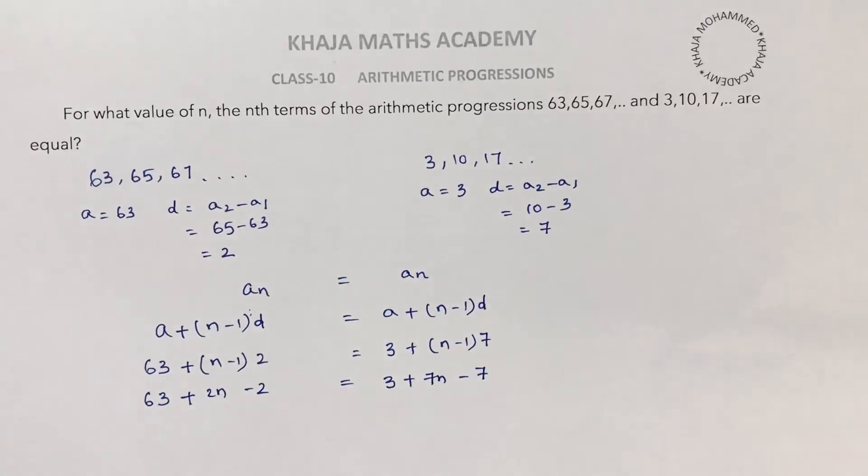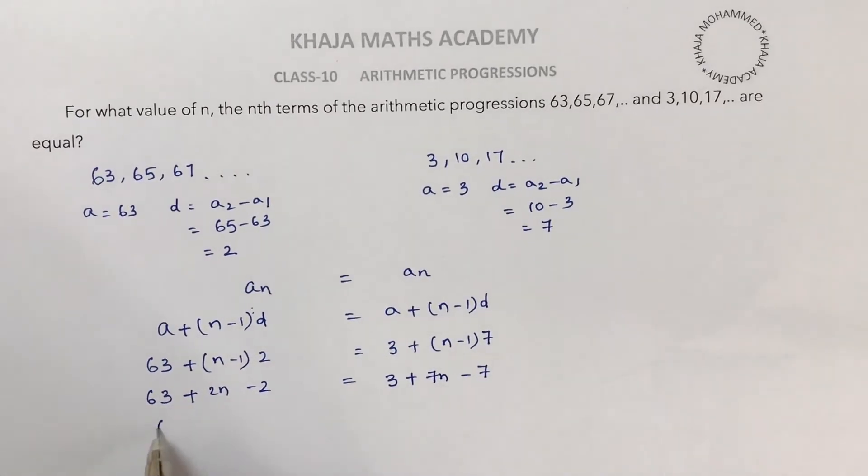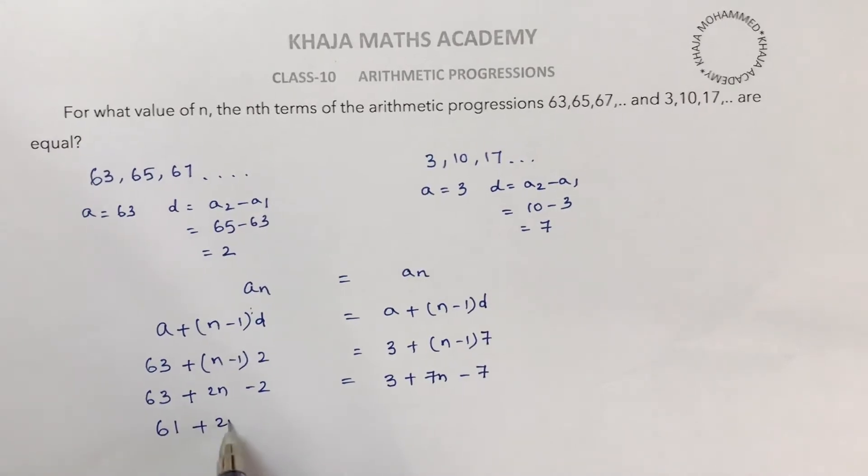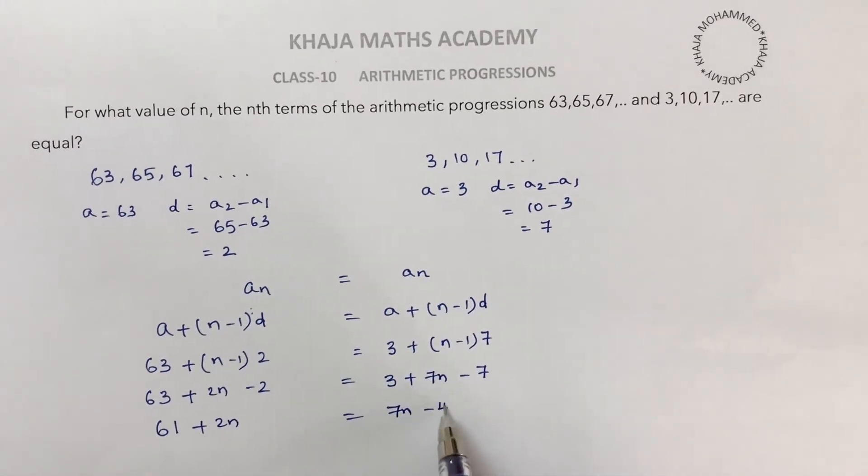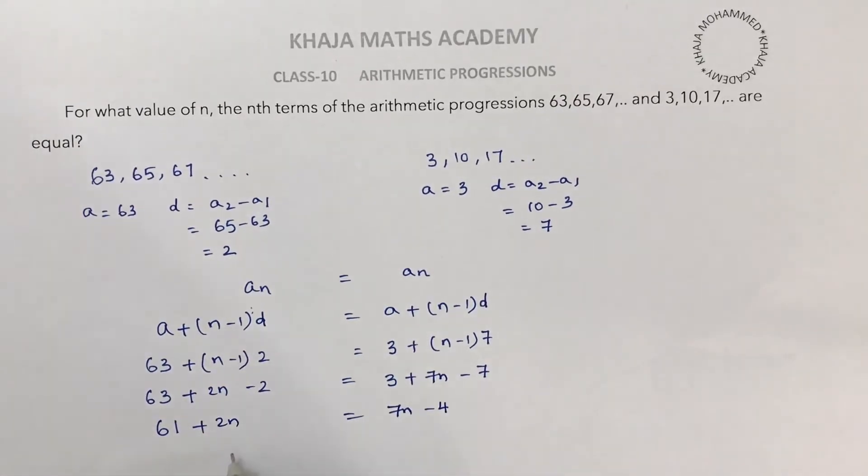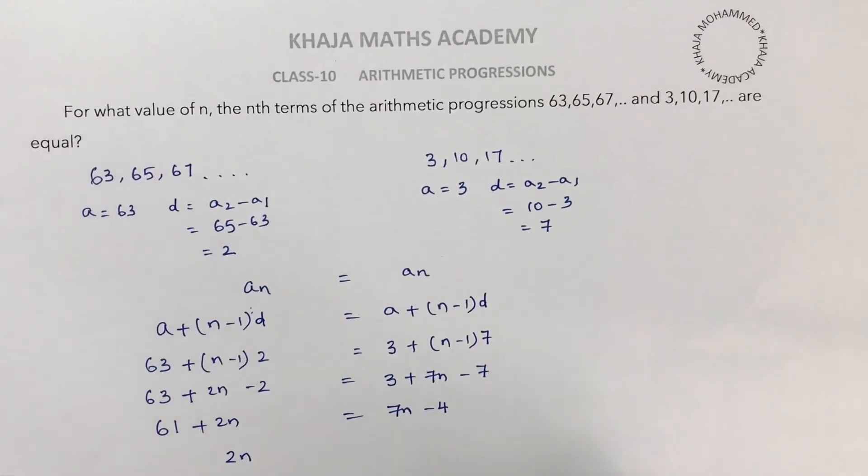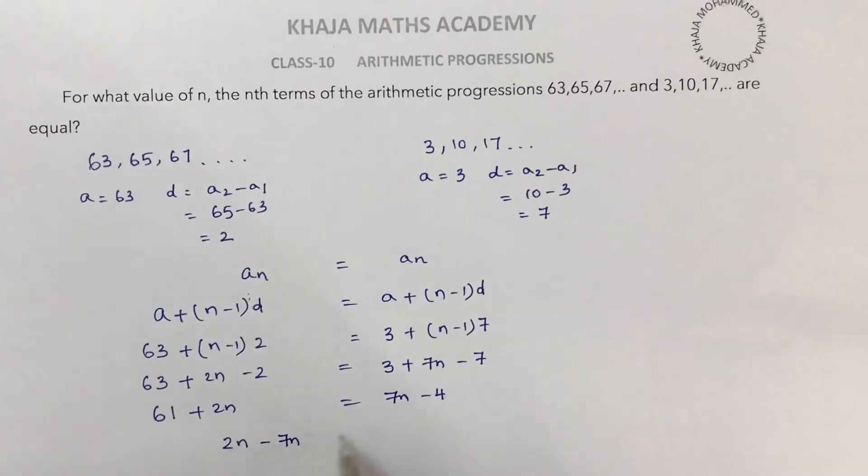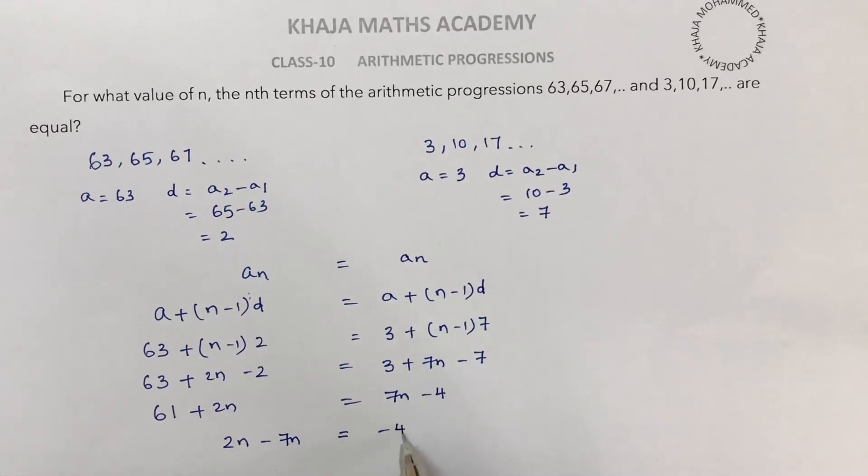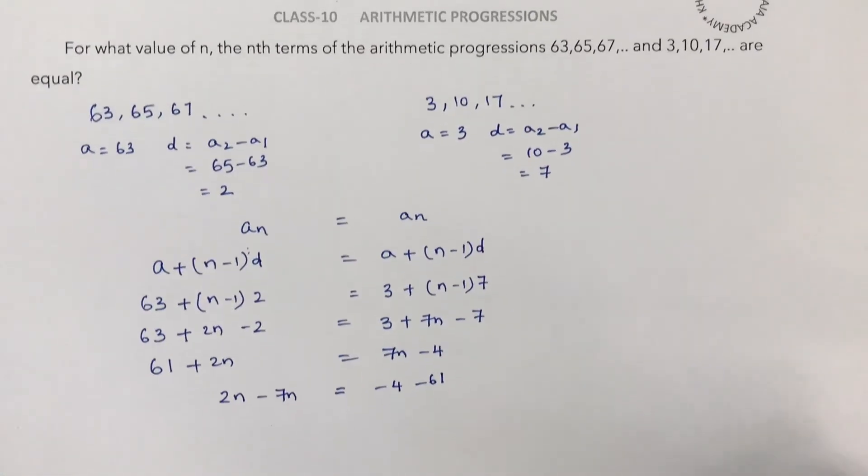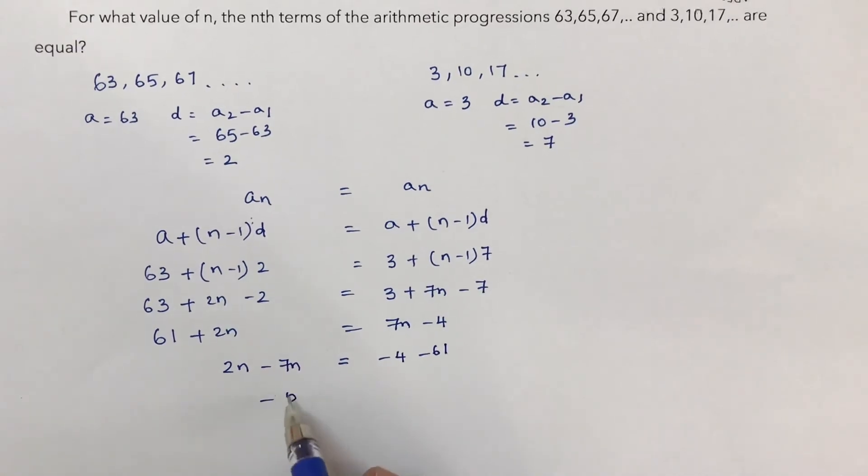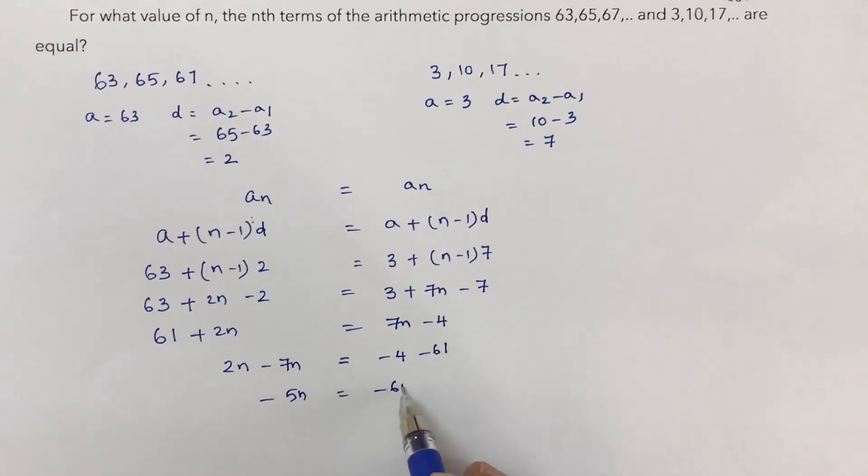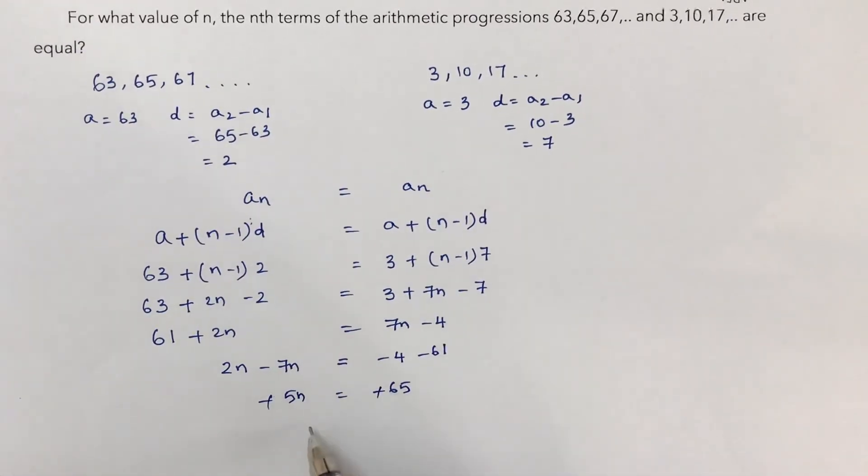minus 7. Now 61 plus 2n equals 7n minus 4, so 2n minus 7n equals minus 4 minus 61. Now minus 5n is minus 65, minus and minus cancel, so